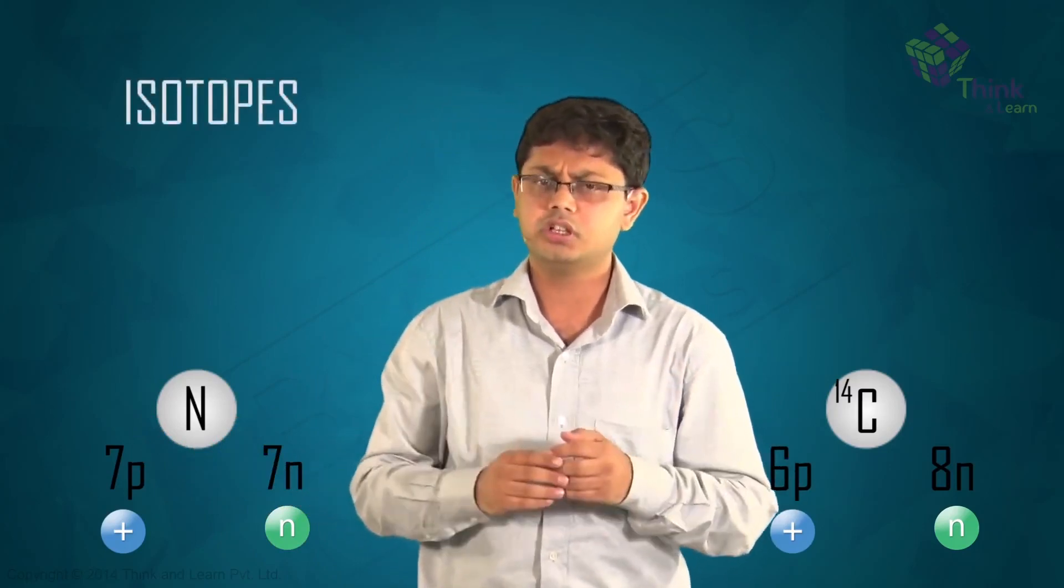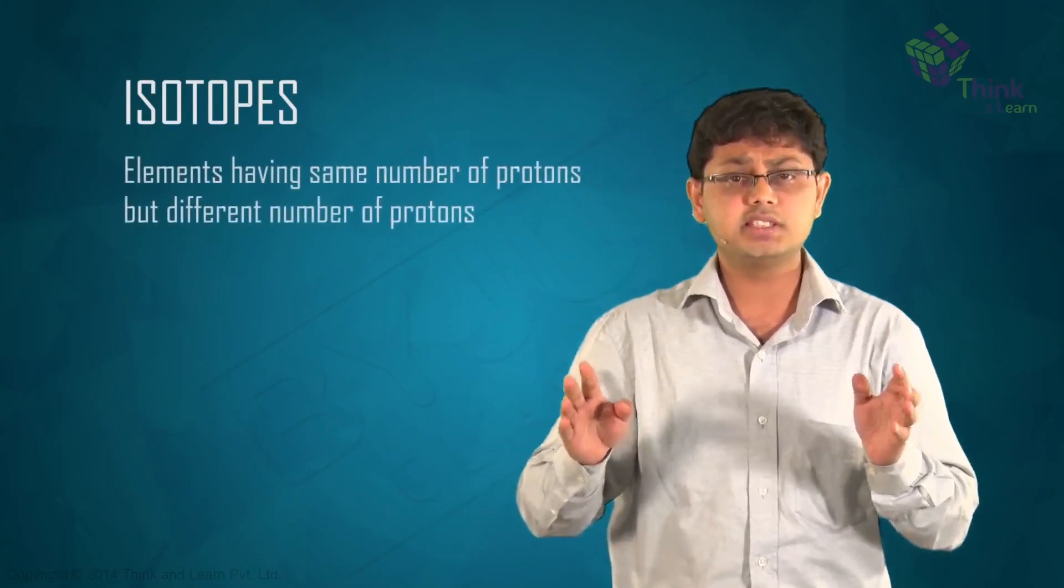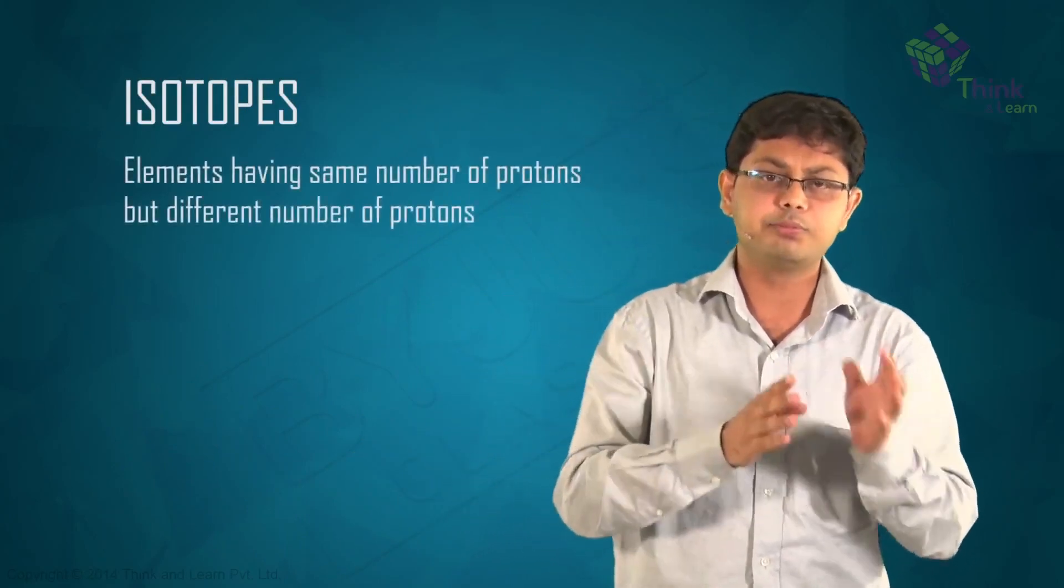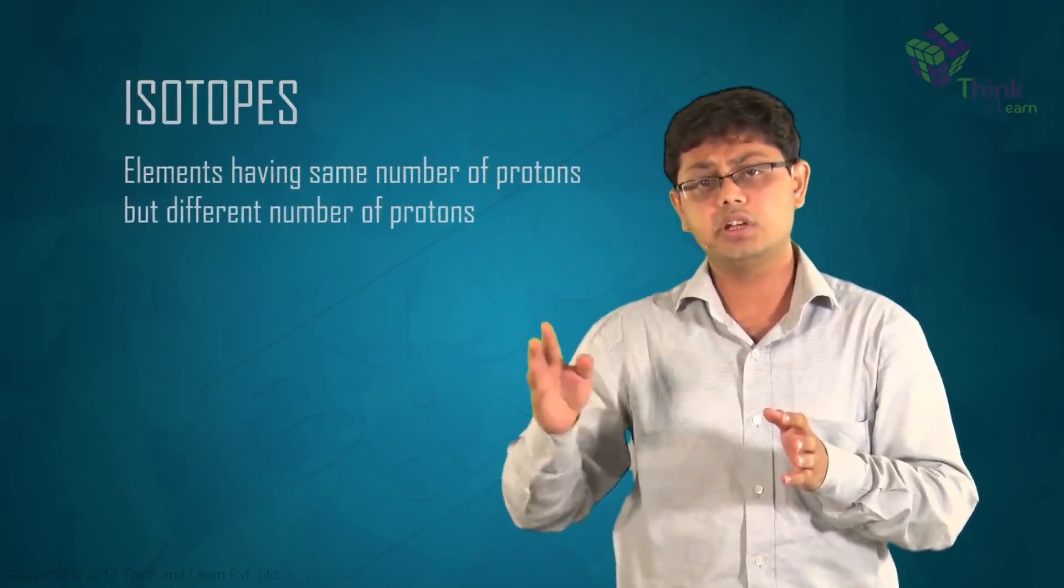It's known as isotopes. So what are isotopes, or what is the technical definition of isotopes? These are elements having the same number of protons but different numbers of neutrons.